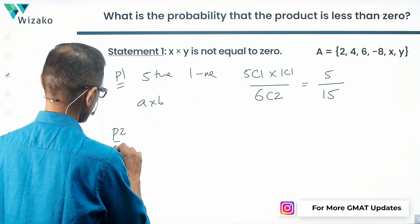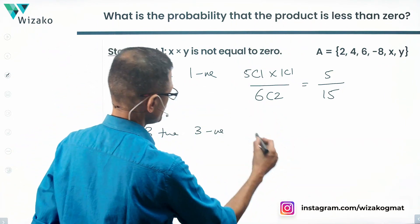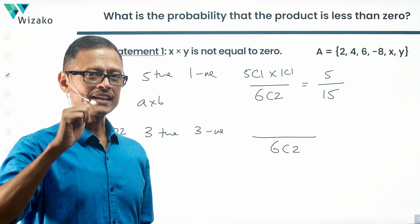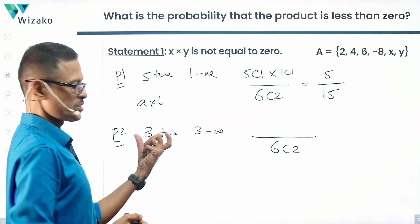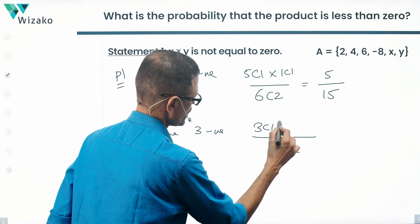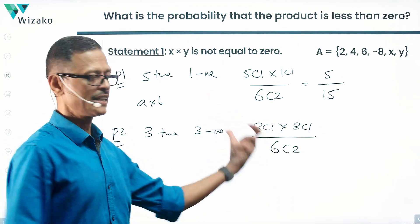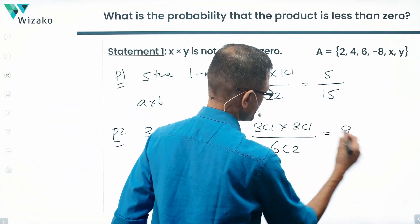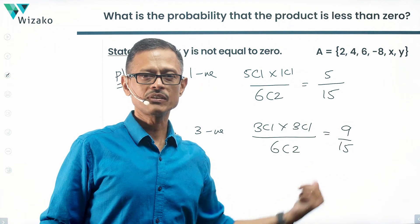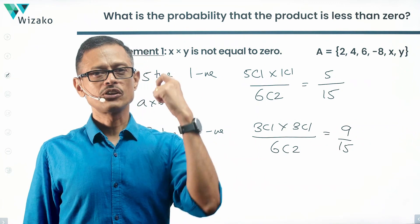In Possibility 2 — three positive, three negative — the denominator is still 6C2 = 15. For a negative product, we need one positive and one negative: 3C1 × 3C1 = 9. So the probability is 9/15. Since 5/15 and 9/15 are two different values, and there is a third possibility as well, we do not get a unique value.